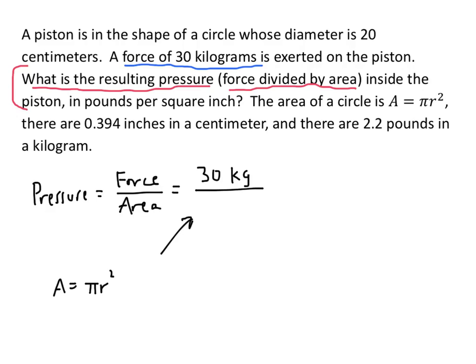We have to be careful here because they tell us the diameter of the circle is 20 centimeters. From geometry, the diameter is 2 times the radius — it's the distance all the way across the circle, while the radius is just half that, the distance from the center out to the edge. So if the diameter is 20, the radius is 10.